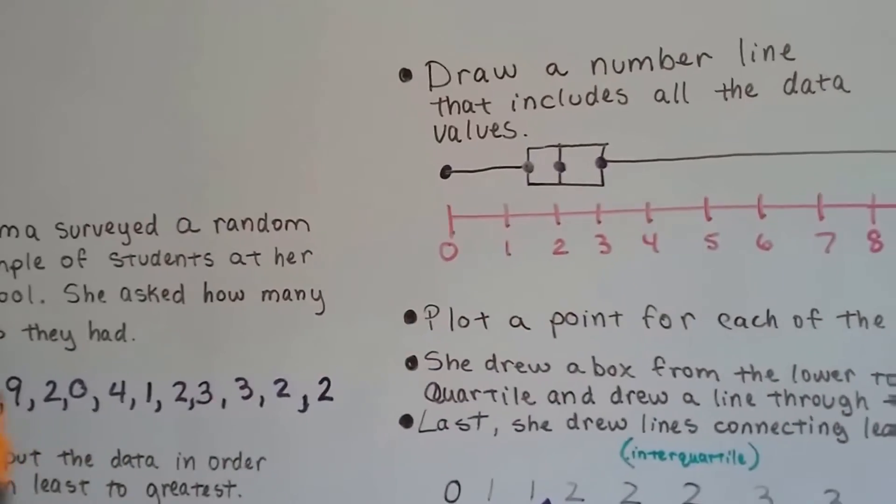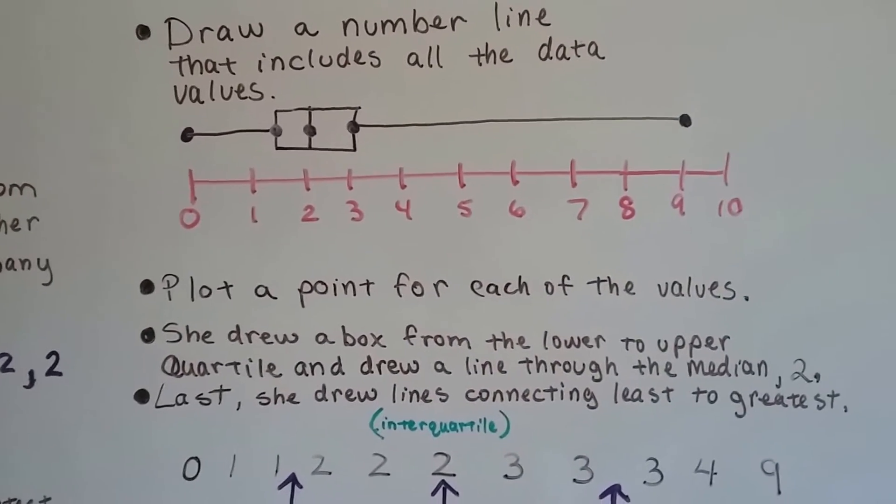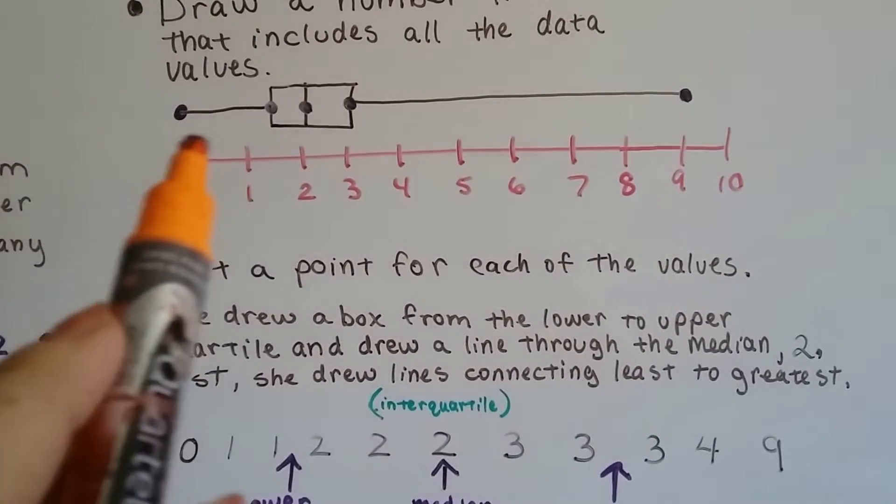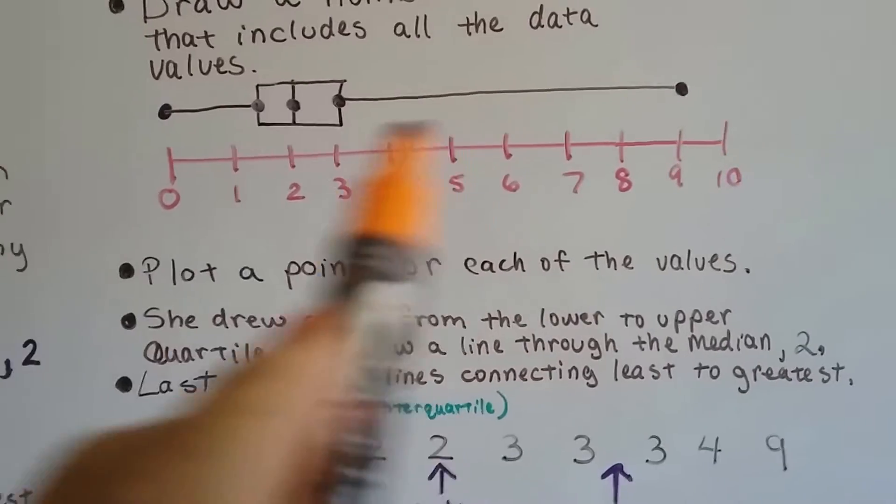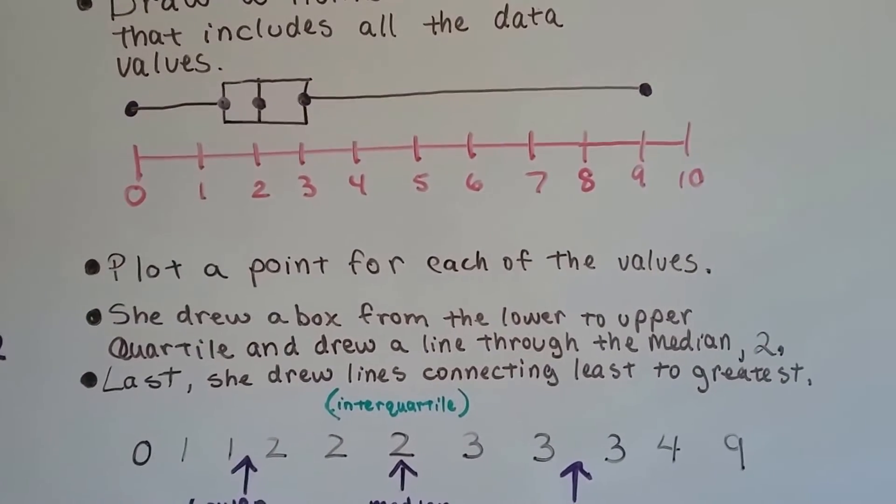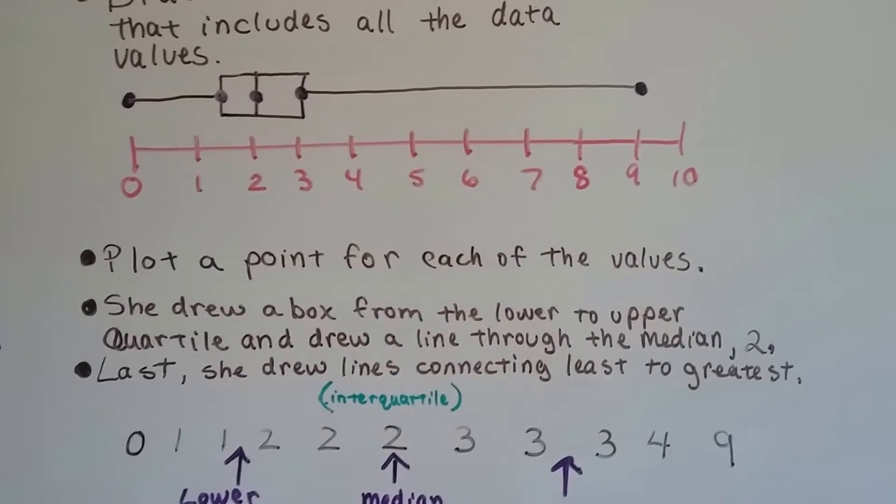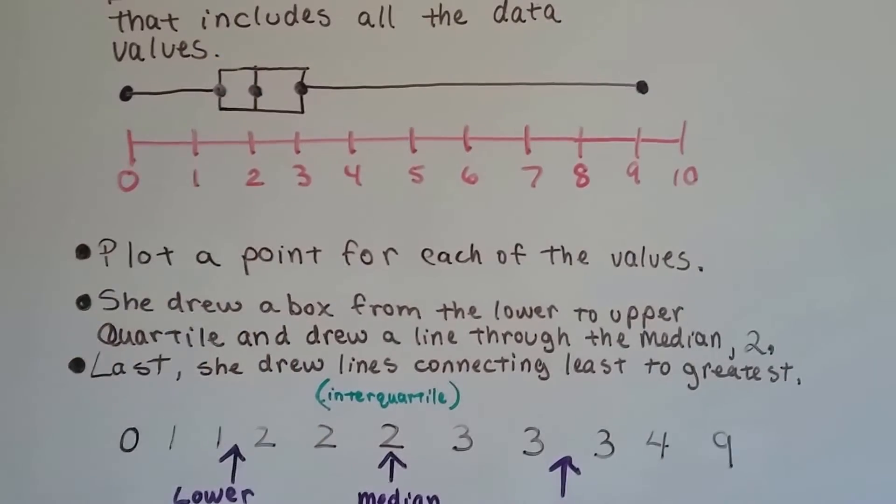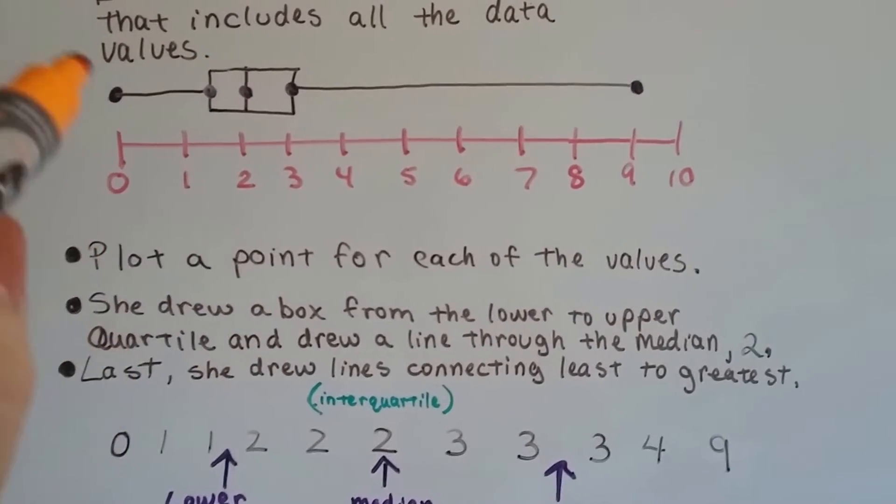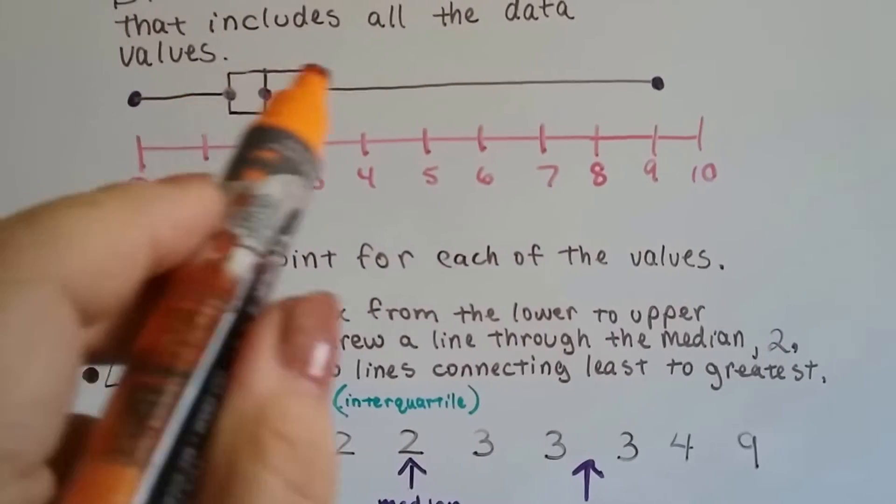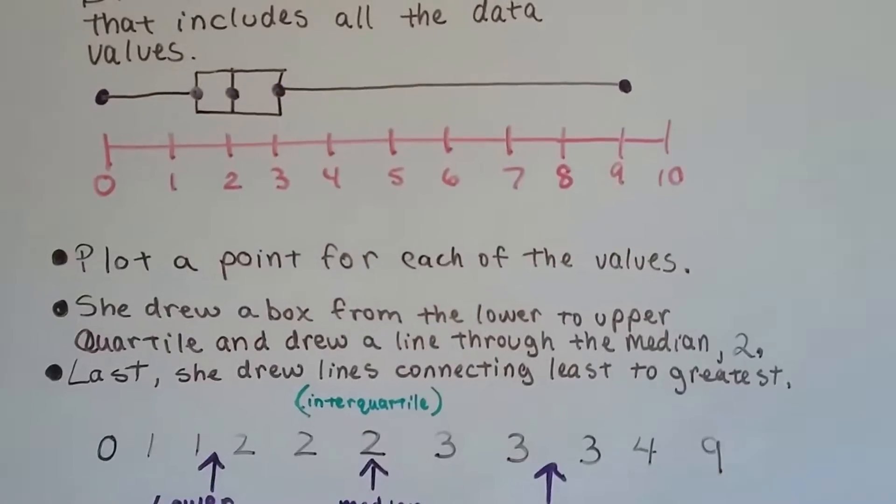You plot a point for each of the values. So here's her values and she drew a box from the lower to upper quartile. And she drew a line through the median. Then she drew lines connecting the least to the greatest. So now it looks like a box with whiskers coming out of it.